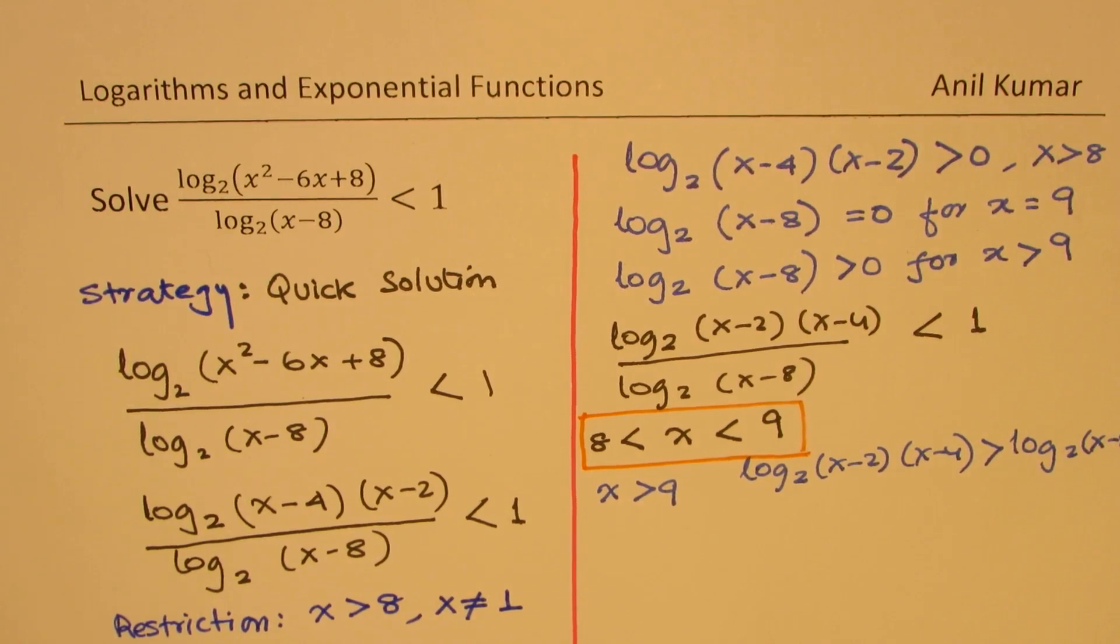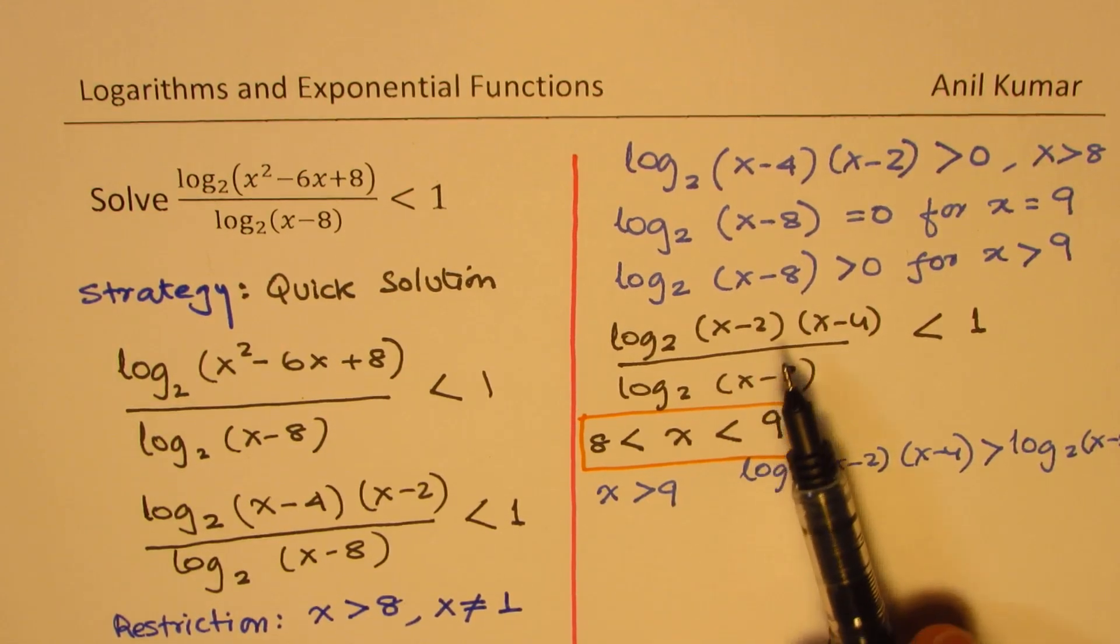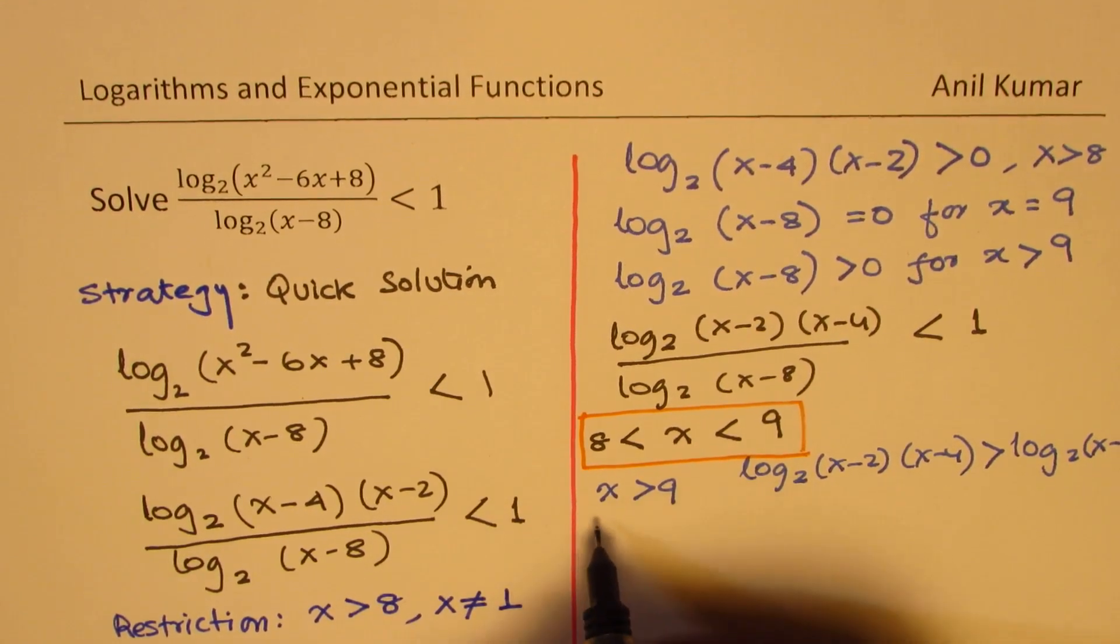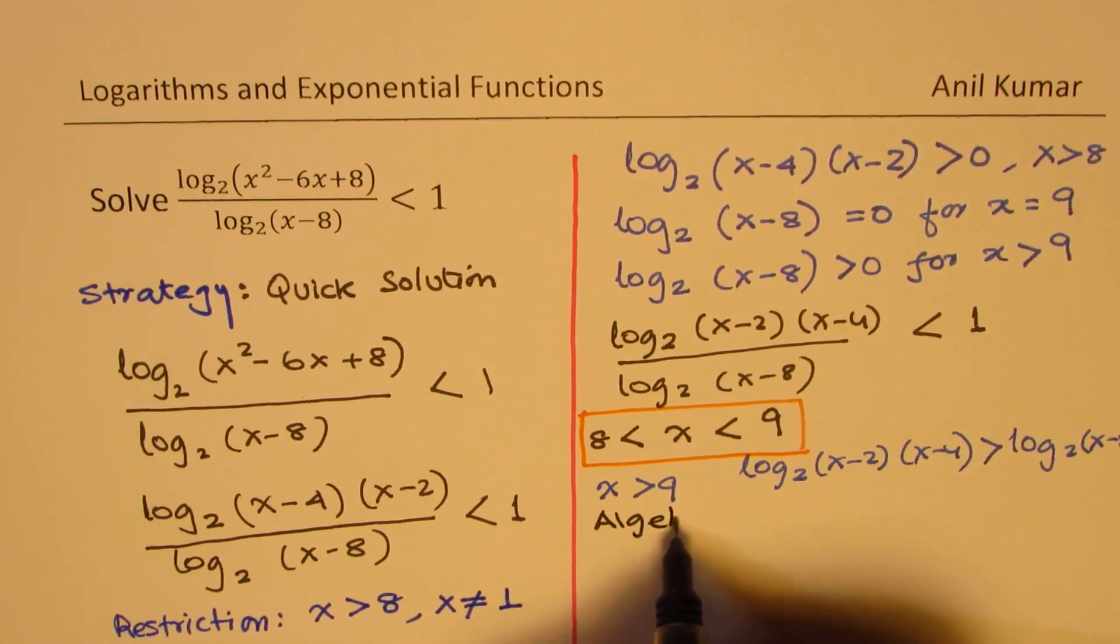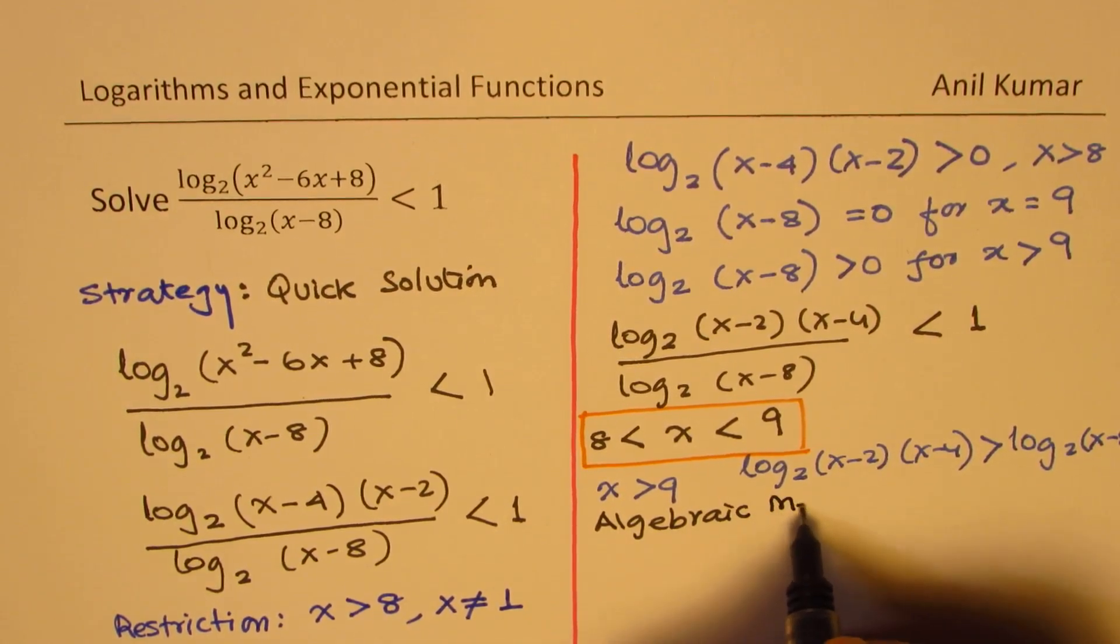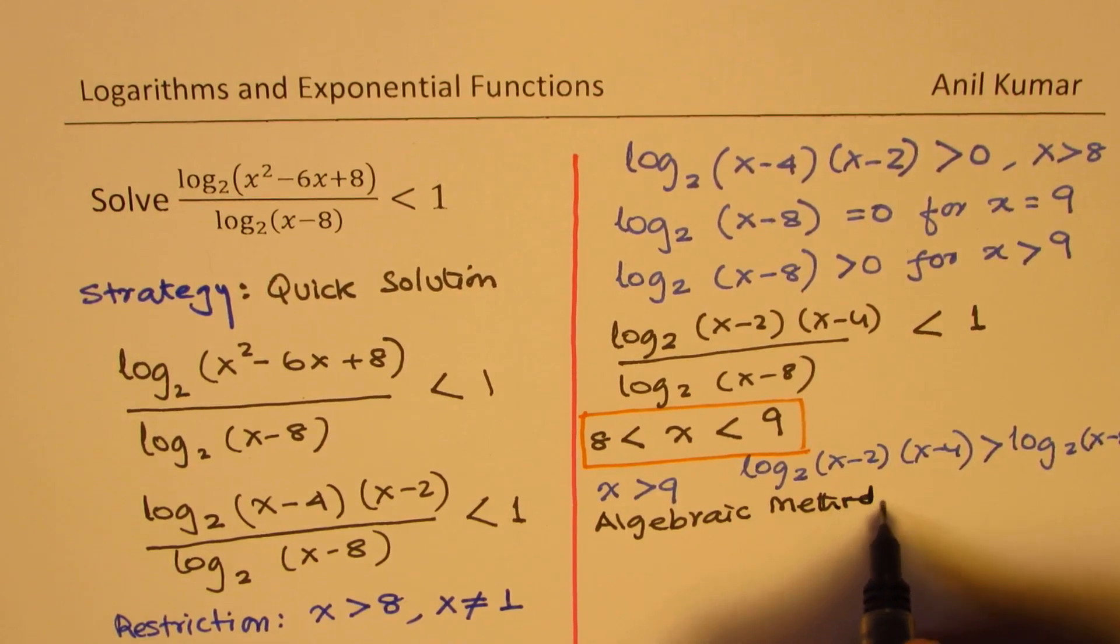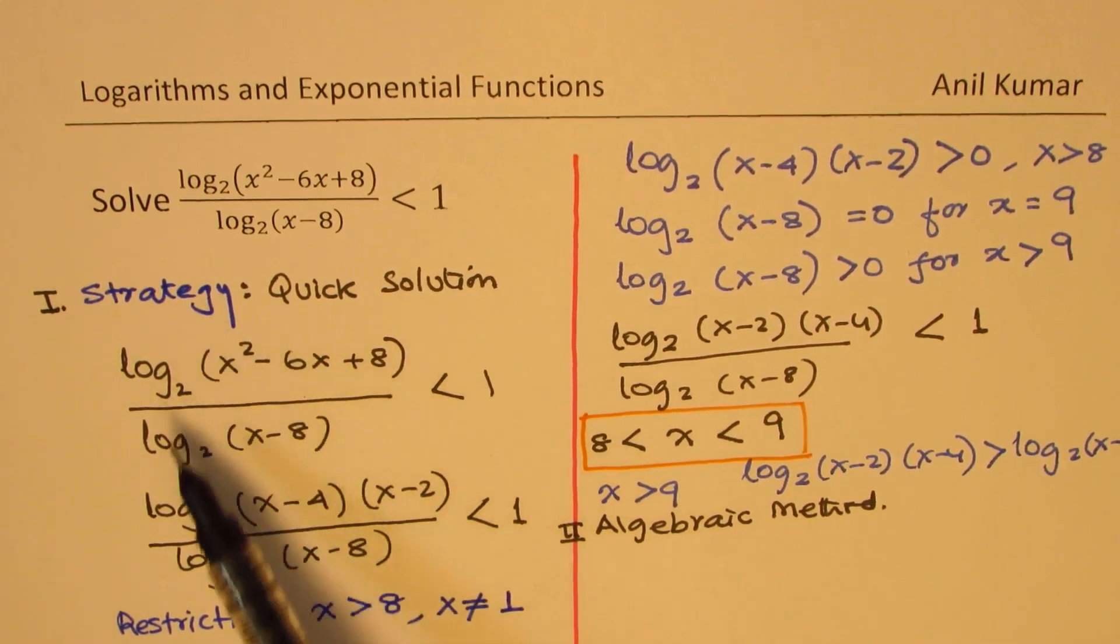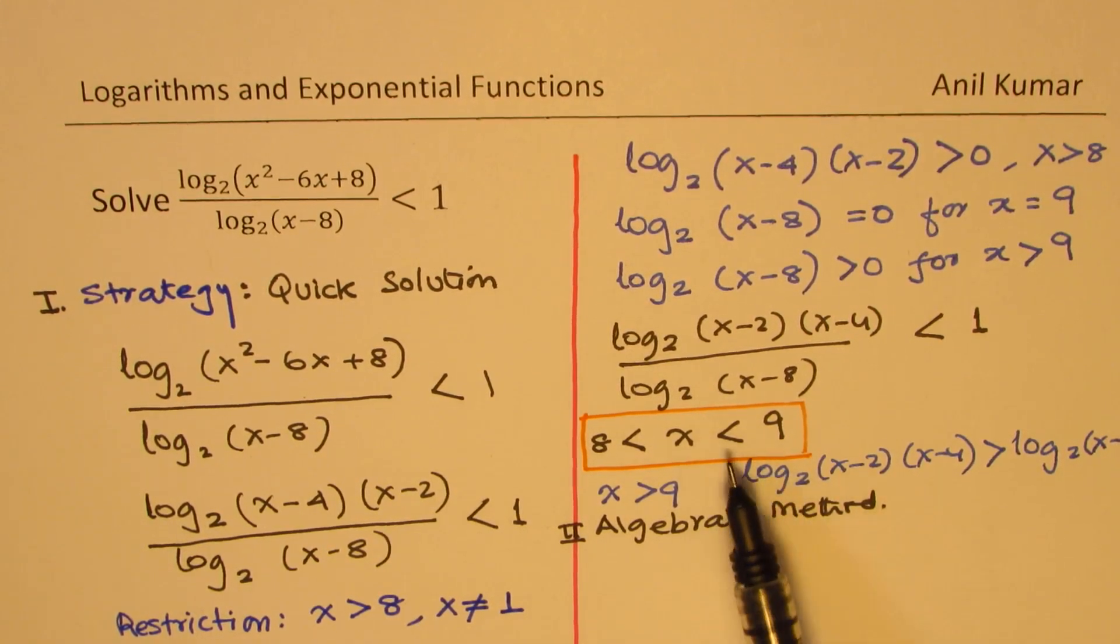Now, for those who want to figure out the solution mathematically, what they can do here is write down this equation in a different way. When we have the same base, this is the long method, let me say, algebraic method. So that is the second option. Strategy was our first option, and I had to just reason it out to you to get the answer. Otherwise, you can always get this answer within a minute.